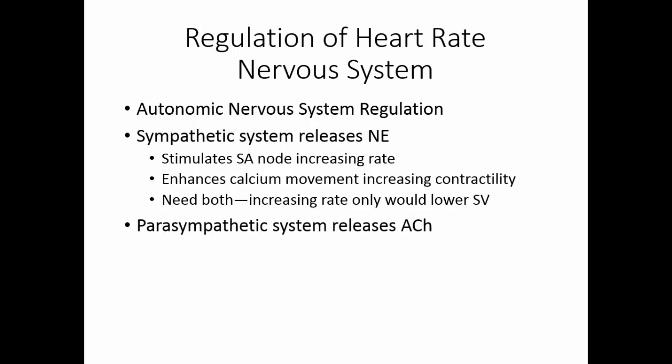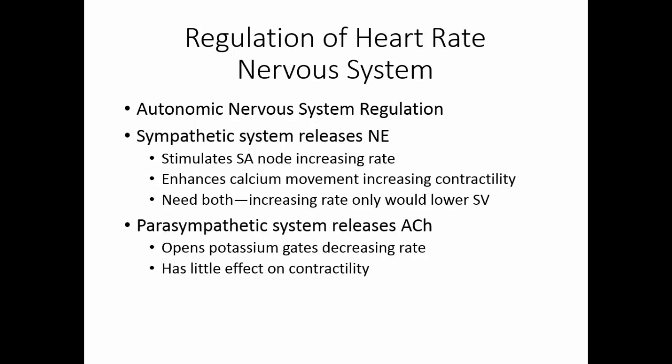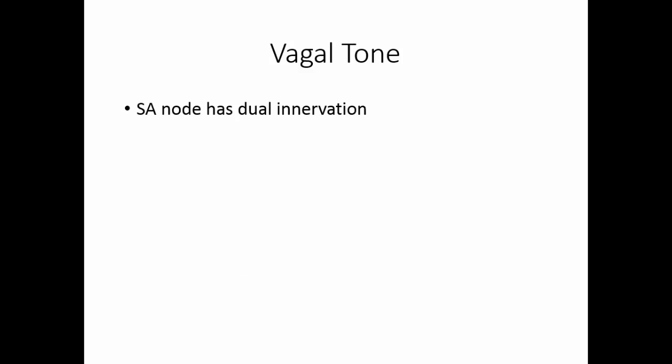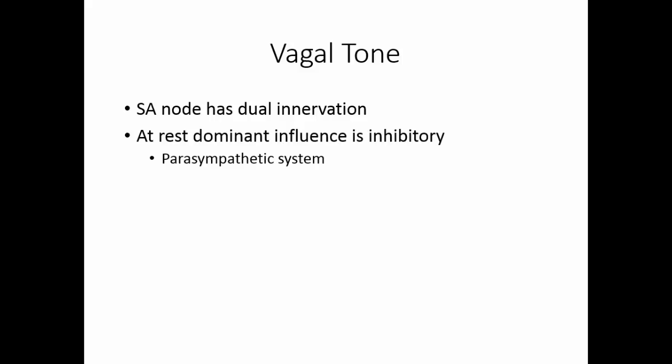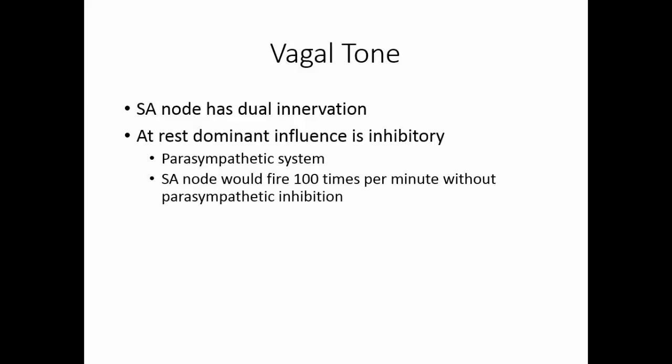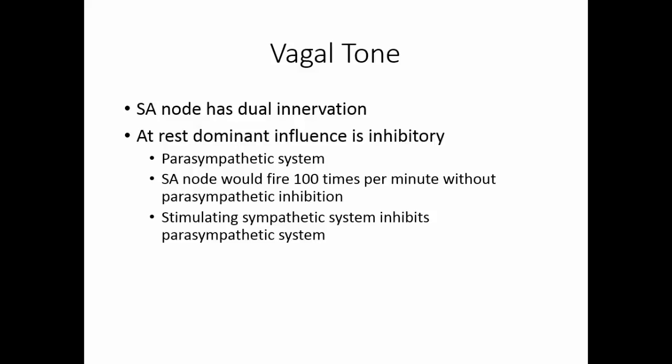The parasympathetic system releases acetylcholine, which causes the potassium gates on the heart muscle to open and decreases heart rate. This has little effect on contractility, so it truly only affects heart rate. The SA node has dual innervation from both the sympathetic and parasympathetic nervous systems. At rest, the parasympathetic system is dominant. Left to its own devices, the SA node would fire about 100 times per minute, but by having a little acetylcholine pumped to the SA node, we keep it down to about 75 beats per minute. As soon as the sympathetic system begins to function, the parasympathetic system shuts down so the sympathetic system can take over.